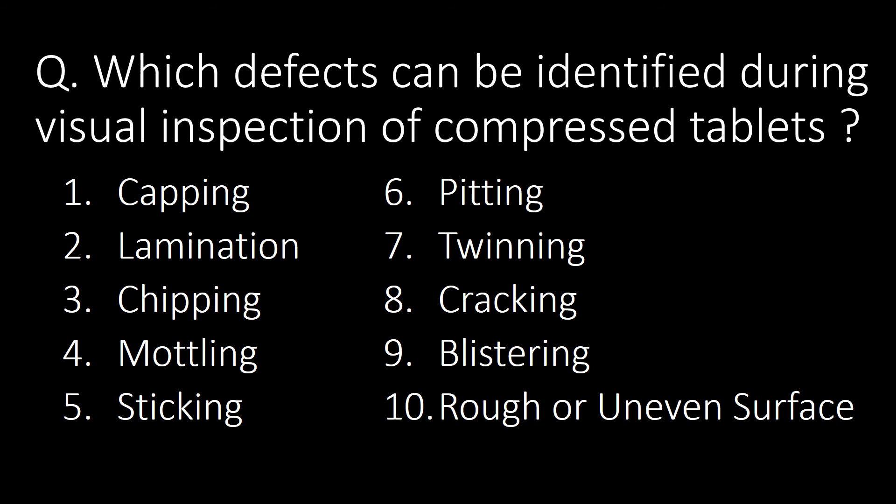Which defects can be identified during visual inspection of compressed tablets? Here is the list of 10 defects: first, capping; second, lamination; third, chipping; fourth, mottling; fifth, sticking; sixth, pitting; seventh, twinning; eighth, cracking; ninth, blistering; and tenth, rough or uneven surfaces.